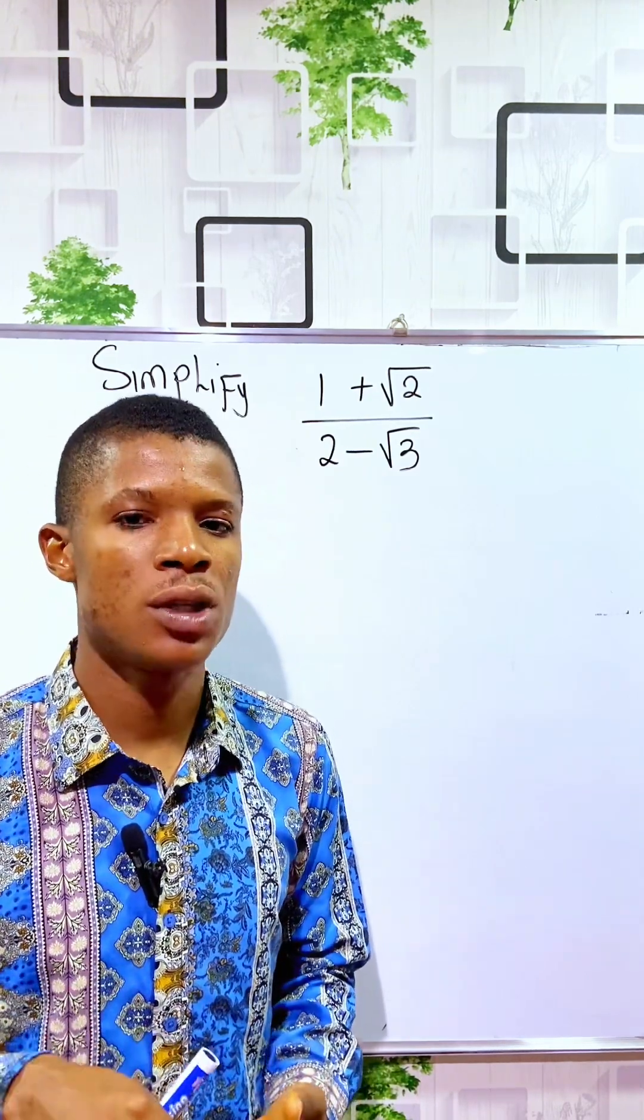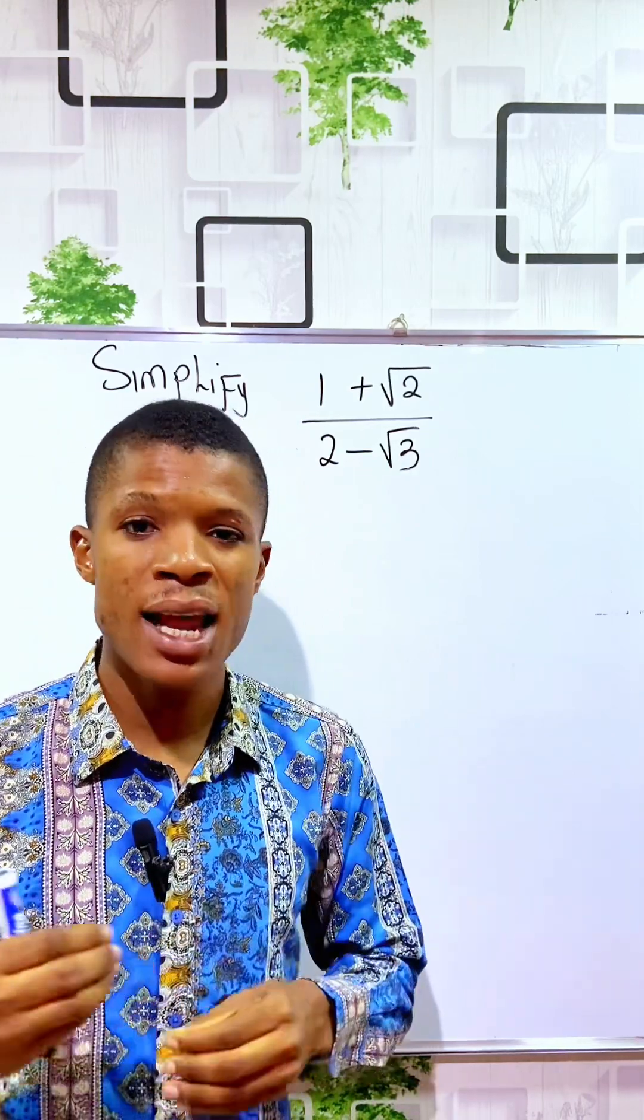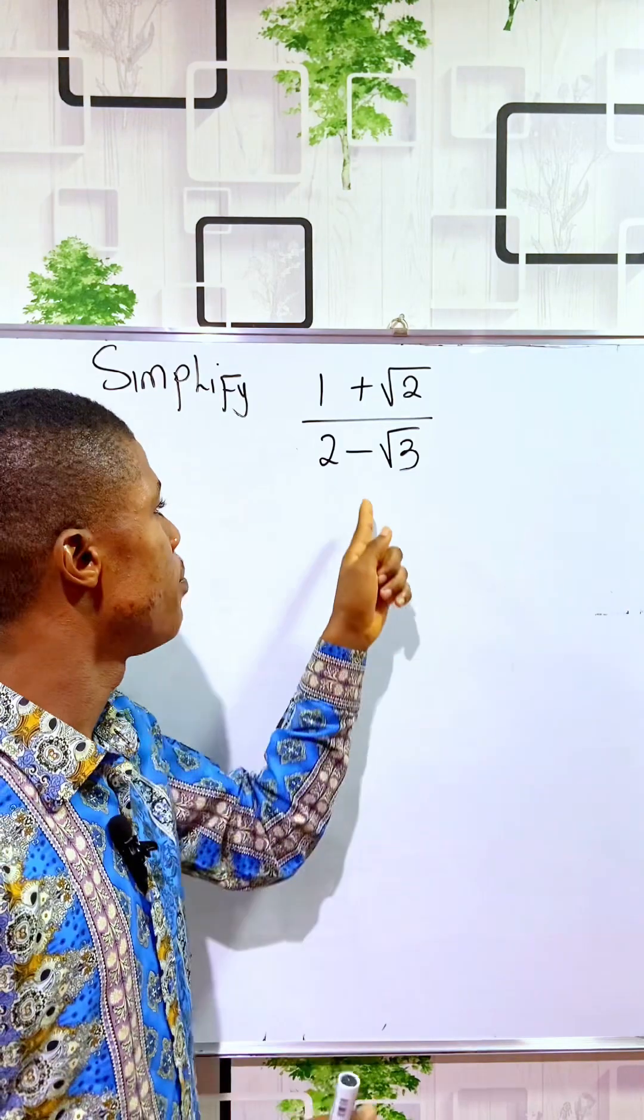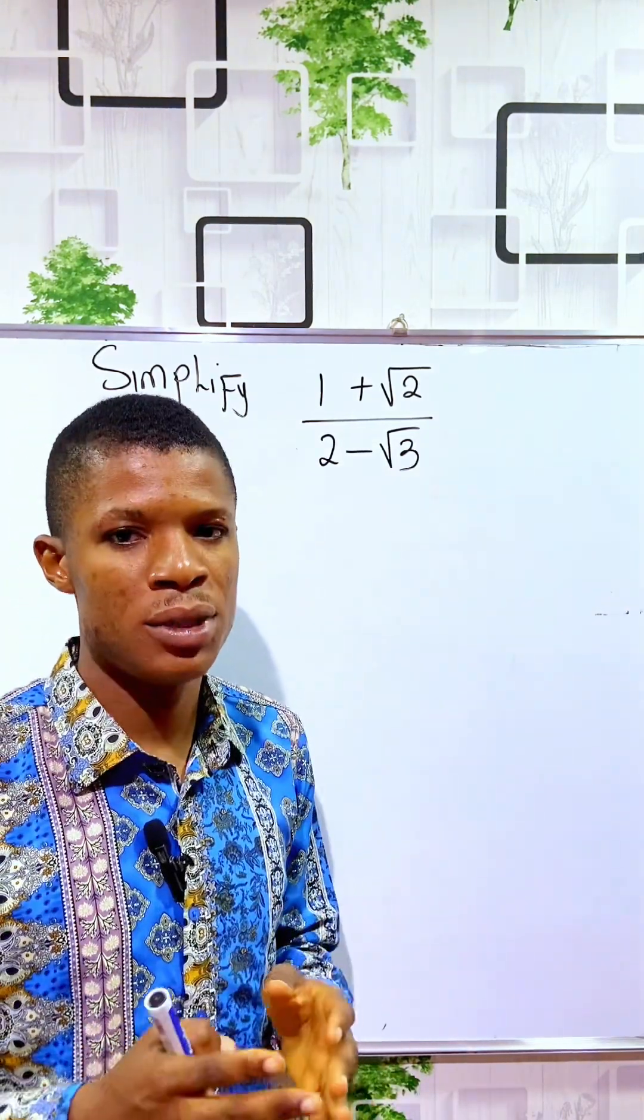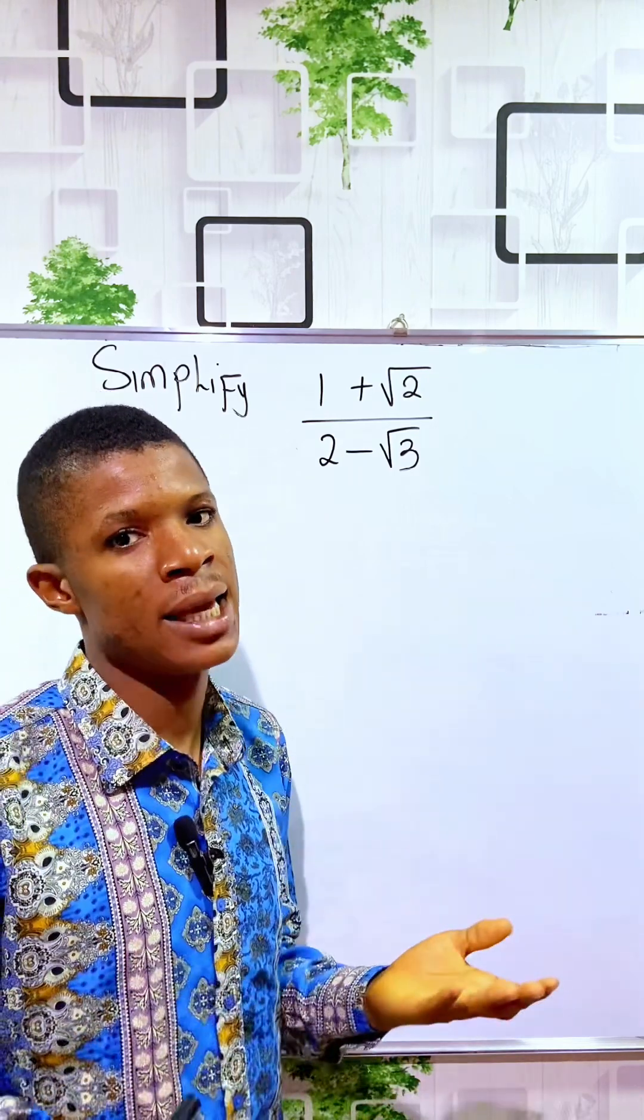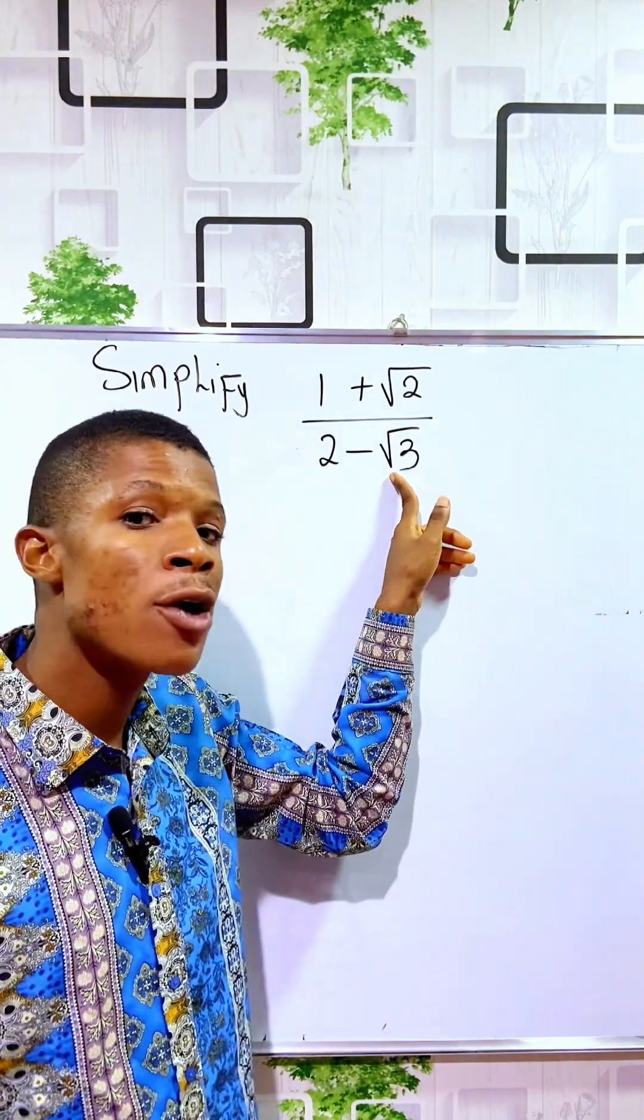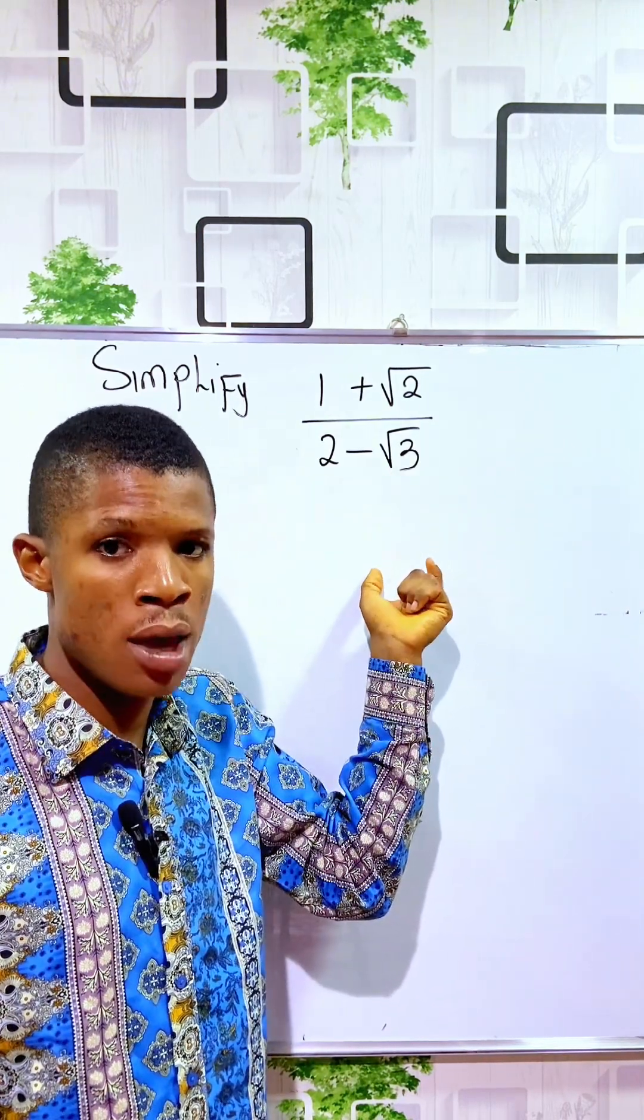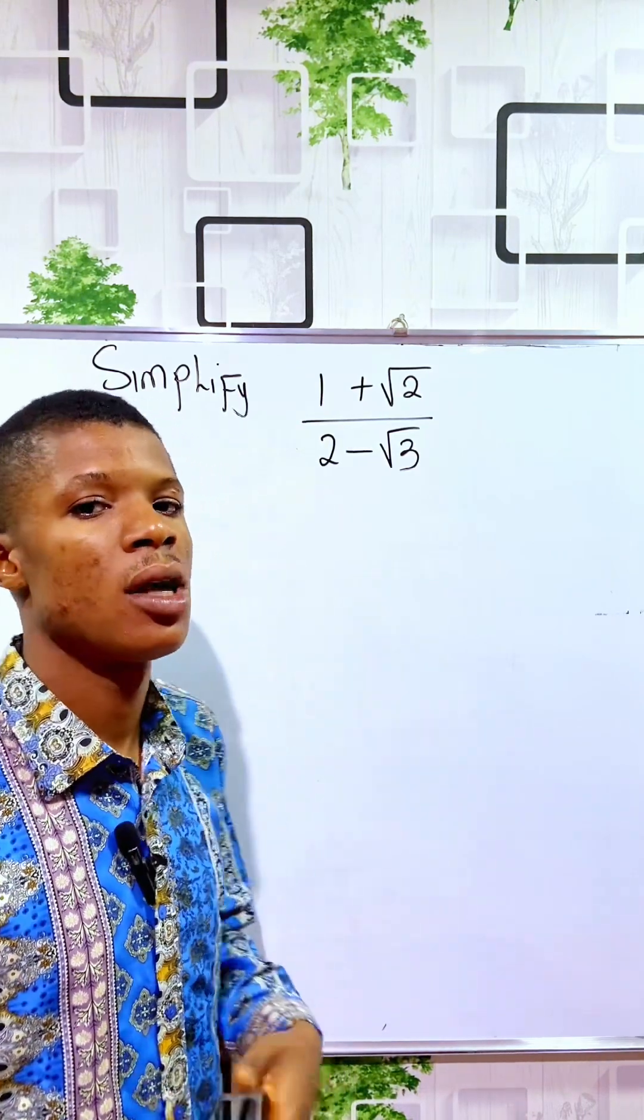What do we mean by rationalizing surds? What we mean is that we are trying to make the denominator a rational denominator, just like a number, so that we don't want the square root or the surd to be in the denominator. And to do that, we make use of conjugate surds.